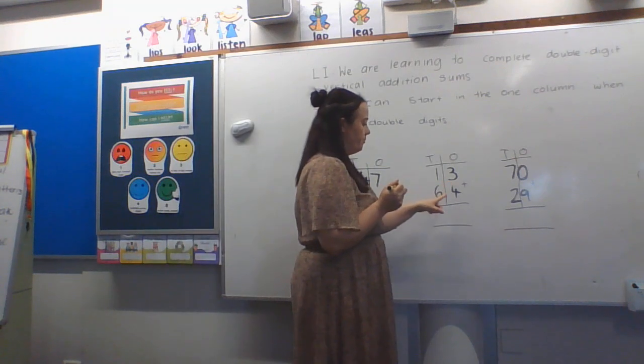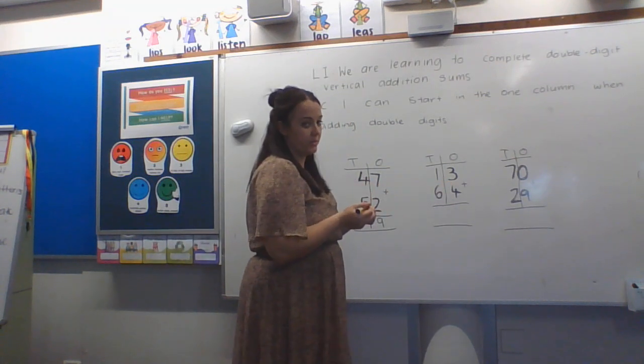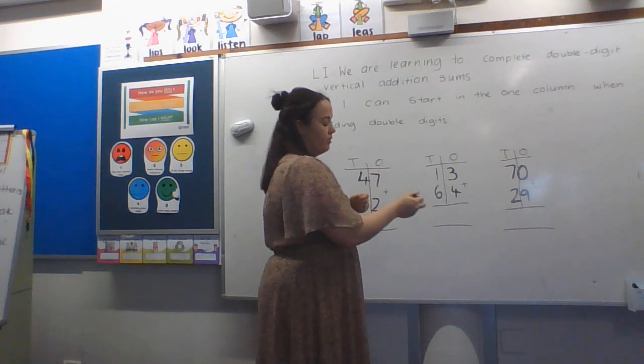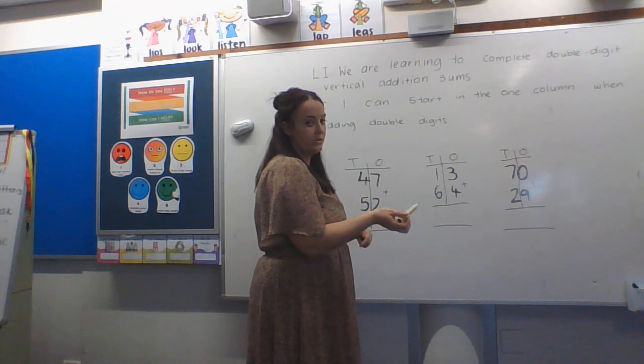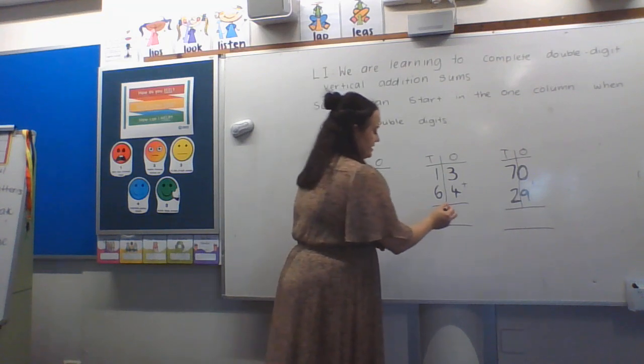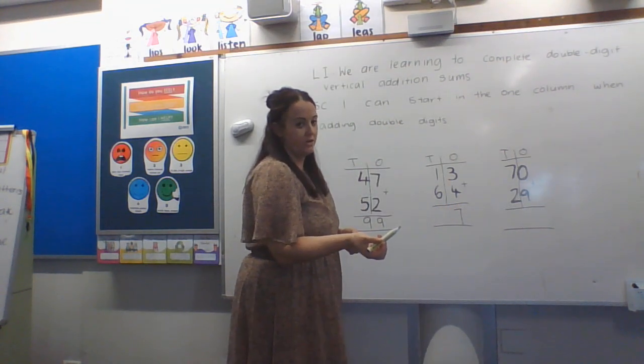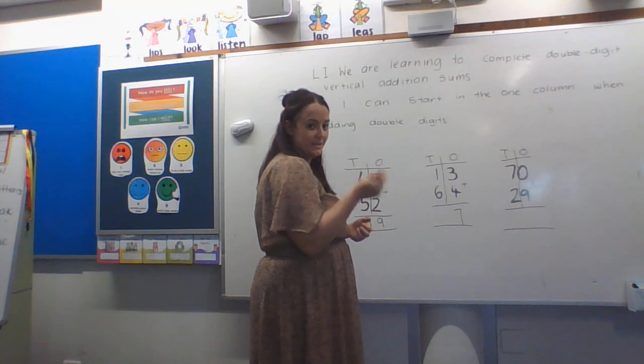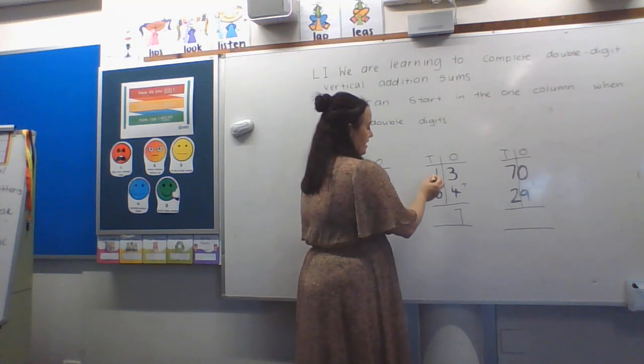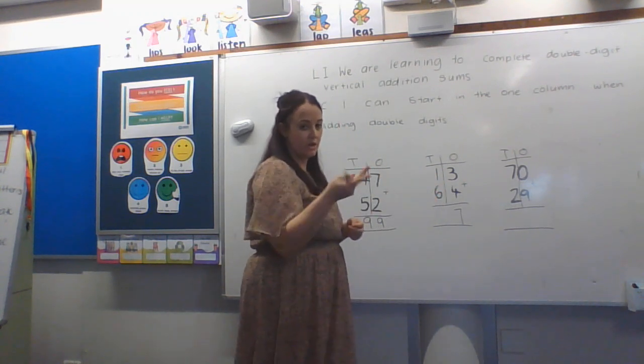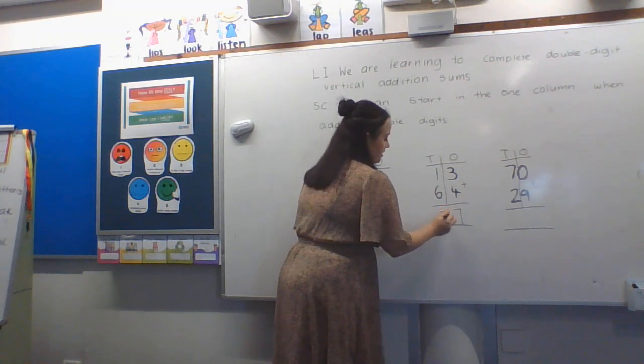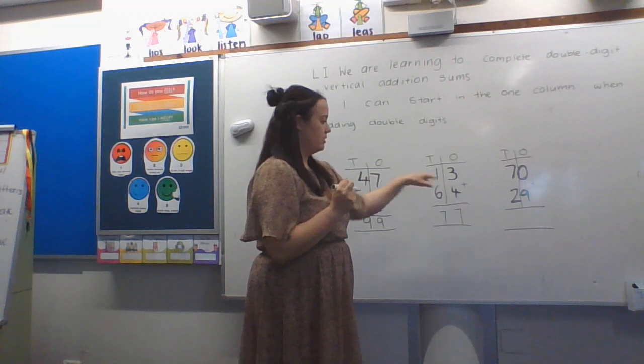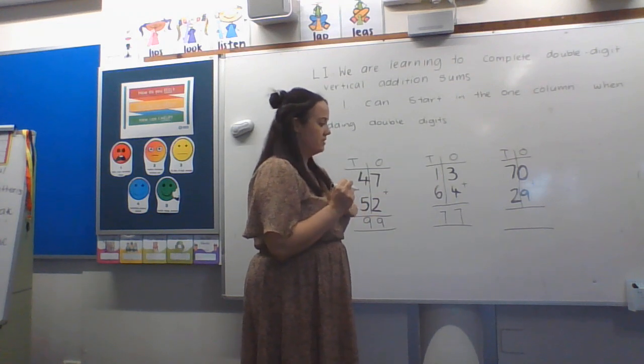Over here we have three plus four so we could do near doubles again and say four plus four is eight. Three is one less than four so take away one is seven, or you could simply do count on four, five, six, seven. And then one plus six we would turn it around and say six plus one equals seven. So thirteen plus sixty four is seventy seven.